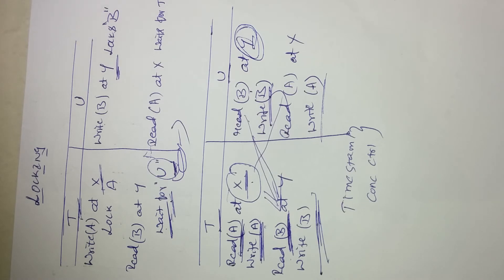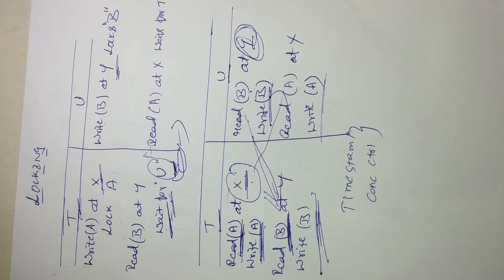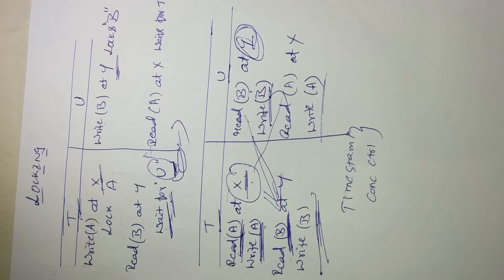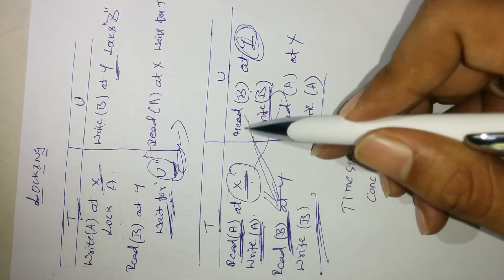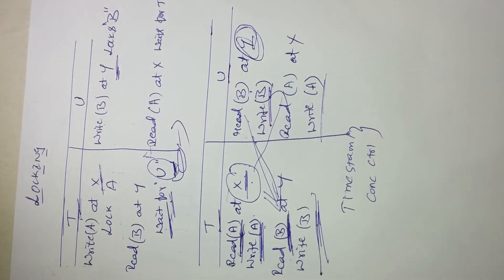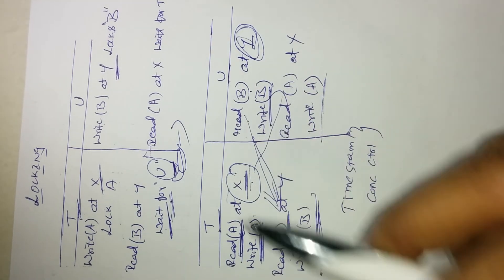The definition of optimistic concurrency control: each transaction is validated before it is allowed to commit. Transaction numbers are assigned at the start of validation, and actions are serialized according to the order of the transaction numbers. This validation takes place during the first phase of the two-phase commit protocol — which is an atomic commit protocol. We consider the interleaving of transactions T and U, which access objects A and B at two types of servers: server X and server Y.